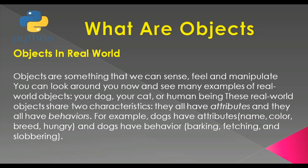First of all, what are objects? There are two definitions for the object. The first one is objects in the real world. Objects in the real world are things that we can sense, feel, and manipulate. You can look around you now and see many examples of real world objects, for example your dog, your cat, or a human being. These real world objects share two characteristics: they all have attributes and they all have behaviors. For example, dogs have attributes like name, color, and hungry.